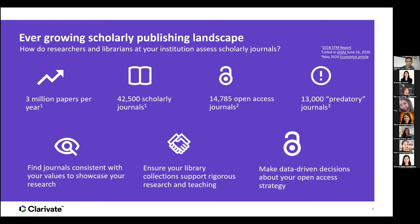This is the ever-growing scholarly publishing landscape. Based on a 2018 report, on a yearly basis almost 3 million papers are published across all subject specializations, going into almost 42,500 scholarly journals — of which close to 15,000 are open access journals. On an annual basis, more new journals are popping up, and because of this advocacy for open science and open access, there are more and more predatory behaviors appearing across the publishing landscape.